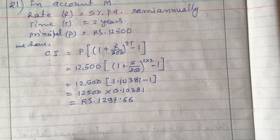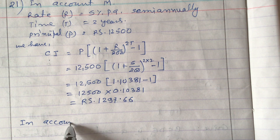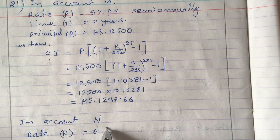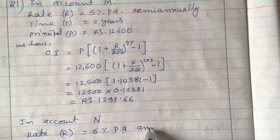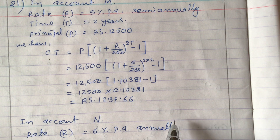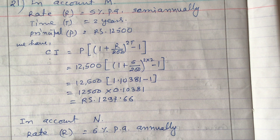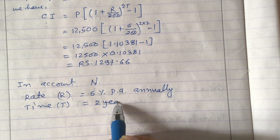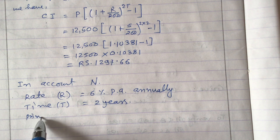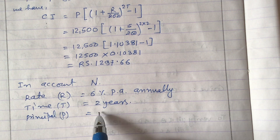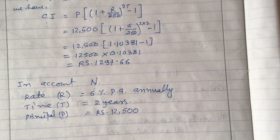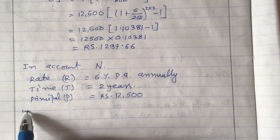Now let us solve for account N. In account N, the rate R is 6% per annum, compounded annually. Time T equals 2 years, and principal P equals rupees 12,500 — the same duration and the same money deposited. Only the rate of interest is different in this account.